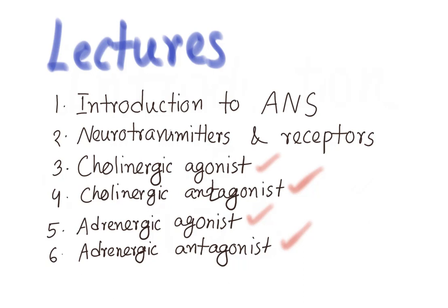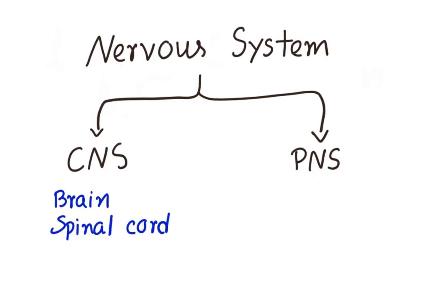The nervous system is divided into two main divisions: the central nervous system and the peripheral nervous system. The central nervous system consists of the brain and the spinal cord, whereas the peripheral nervous system consists of the nerves that enter and leave the central nervous system.